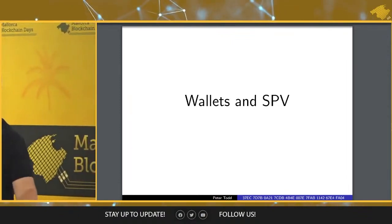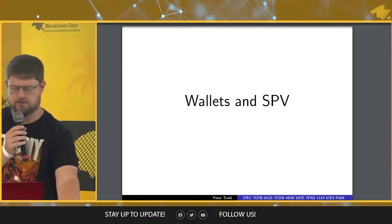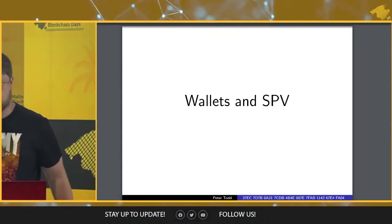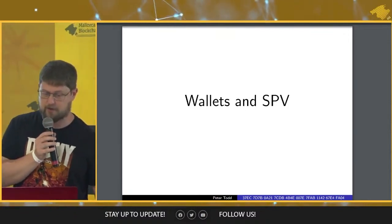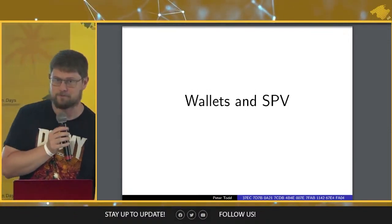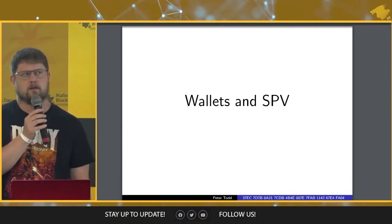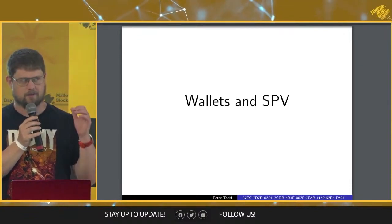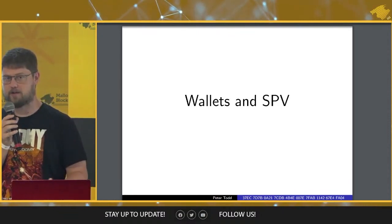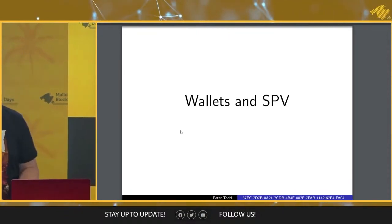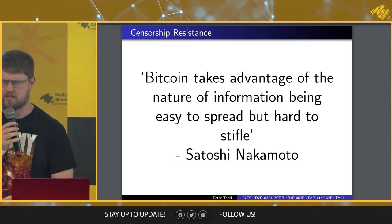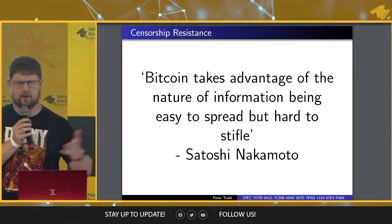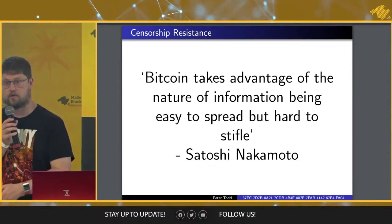Why does Bitcoin work? What's the security model? There's a wonderful quote by Satoshi Nakamoto: 'Bitcoin takes advantage of the nature of information being easy to spread but hard to censor.' One of the main things nodes do — if you had a magical ledger of some kind that anyone on the internet could upload to and download, a sort of public bulletin board, you wouldn't need most of what nodes do, because you'd just publish information there and go validate your rules.